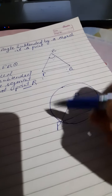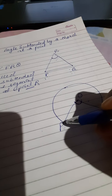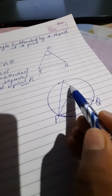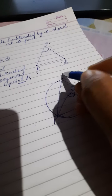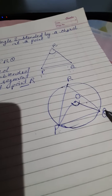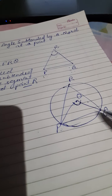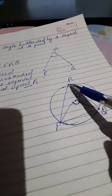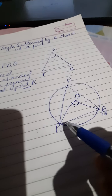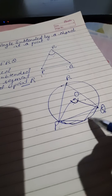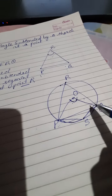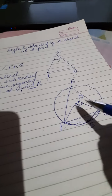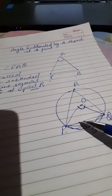The same chord PQ is subtending angle POQ at the center, and the same chord PQ is subtending angle PRQ at point R on the circle, and also angle PSQ at point S on the circle. So this is known as the angle subtended by a chord at the center and at the circle.